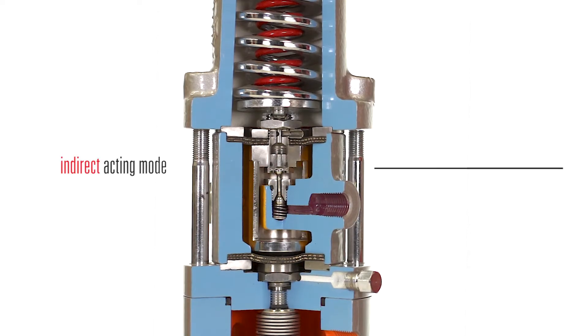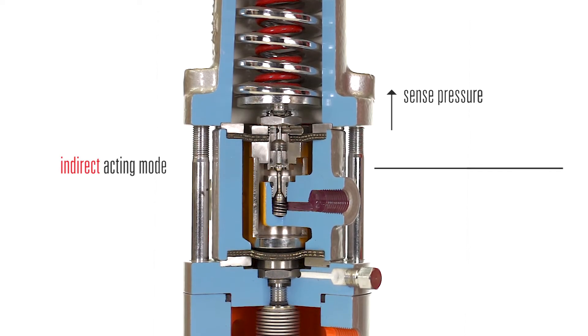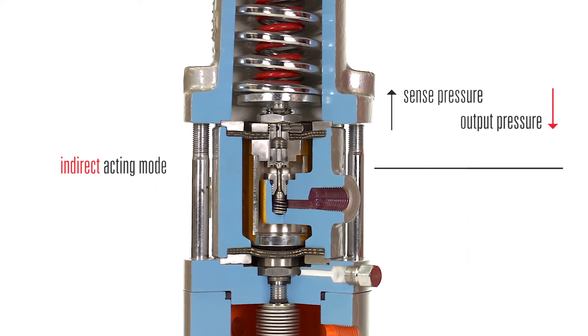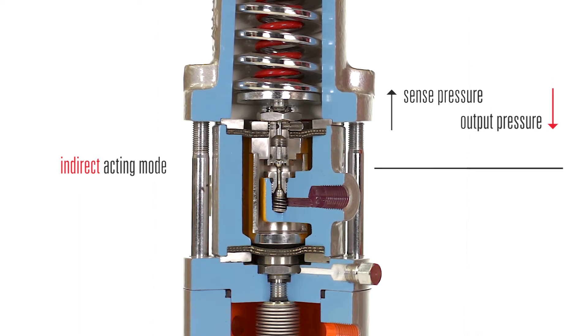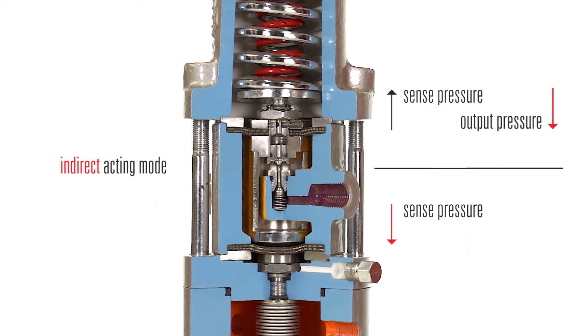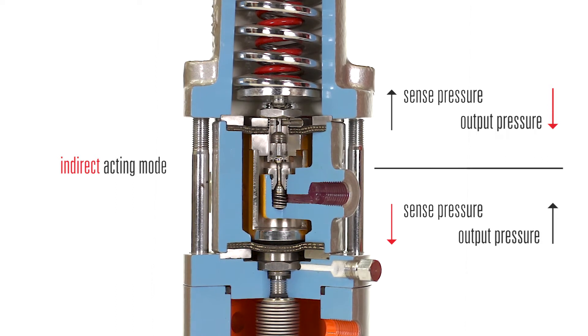When it is in indirect acting mode, an increase in sense pressure will decrease output pressure to the valve, while a decrease in sense pressure will increase output pressure to the valve.